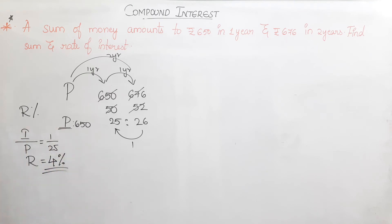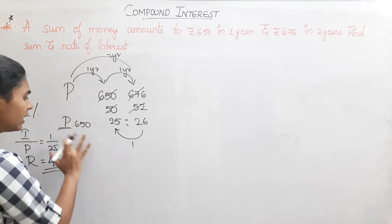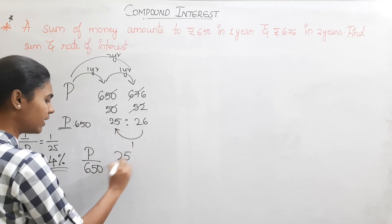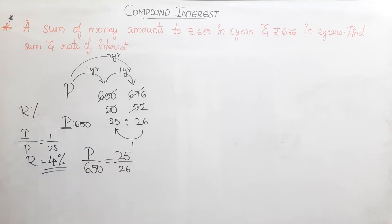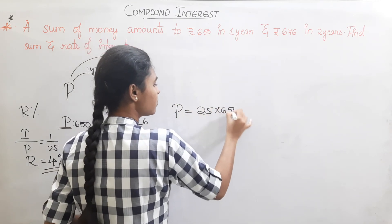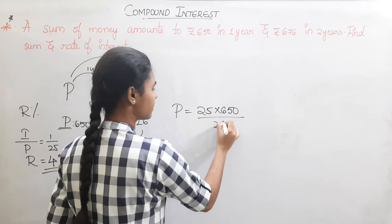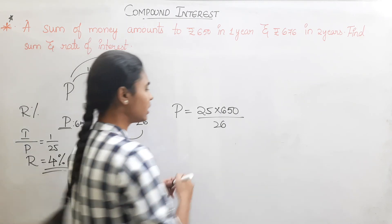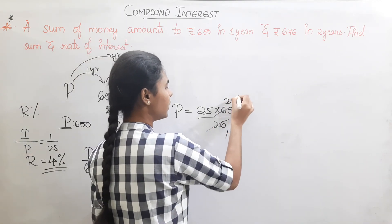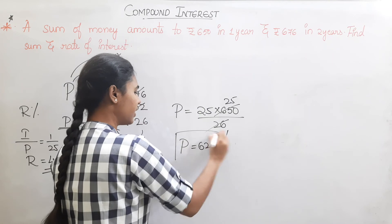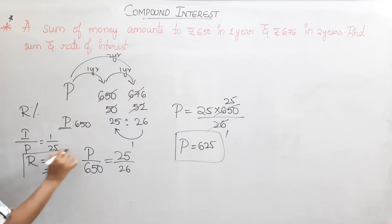Now to find the principal in one step. P by 650 equals 25 by 26. So P equals 25 into 650 by 26. 26 into 25 is 650, so P equals 25 into 25, that is 625. Rate is 4%, principal is Rs. 625. Very simple.